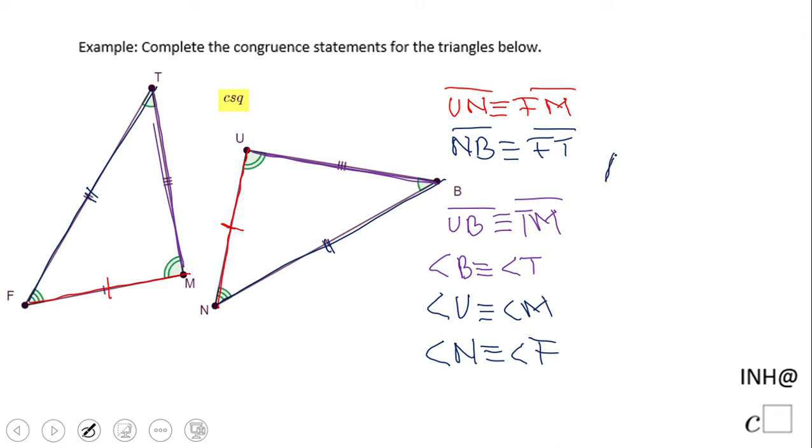And now we can write the triangle congruence. Now on this statement you really need to be careful. Okay? Let's say you start with B, U, N. Congruent to triangle... Let me erase this because I don't have enough space.